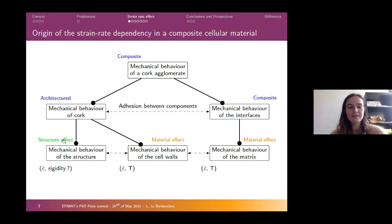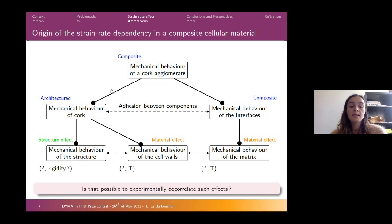Each one of these components has a strain rate dependence. The interfaces are a polymer, so it's expected to be dependent on strain rate and temperature. Cork, as it's architectured, can have a structure effect in the strain rate dependency. Furthermore, as cork is a polymeric material, it is also dependent at the cell wall scale on the strain rate and temperature. The question now is: is it possible to experimentally decorrelate such effects?